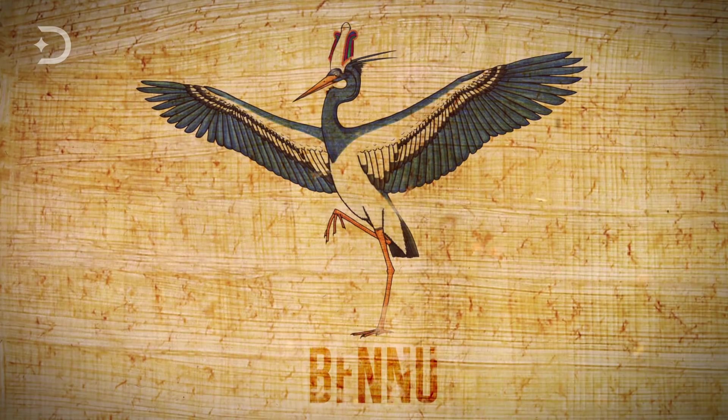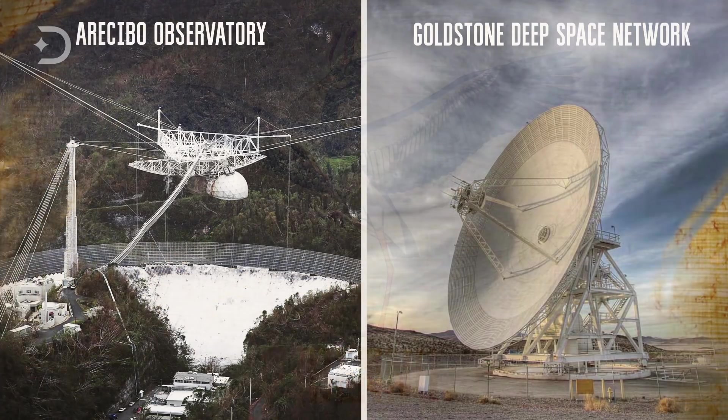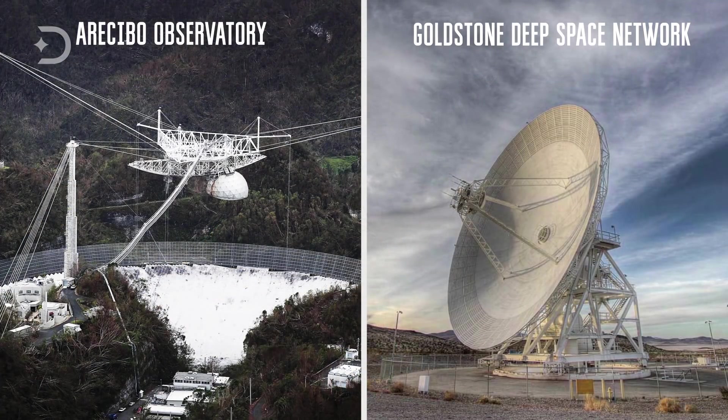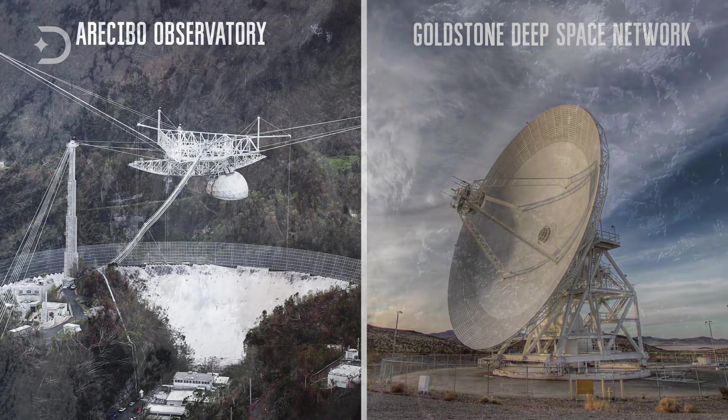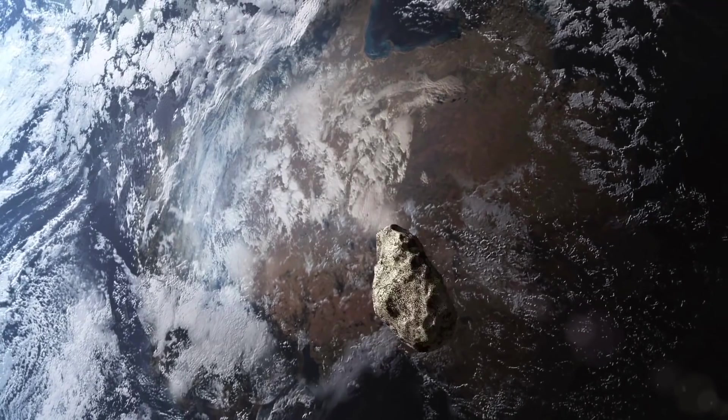Named after the ancient Egyptian mythological bird associated with the Sun, creation and rebirth, the asteroid Bennu was heavily observed by scientists from the Arecibo Observatory and the Goldstone Deep Space Network as it came closest to the planet Earth on September 23, 1999.